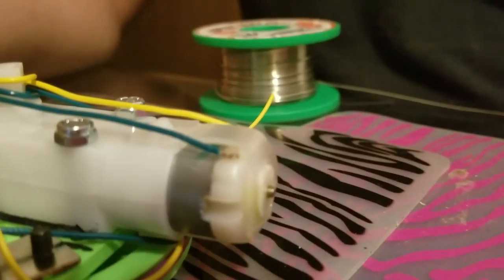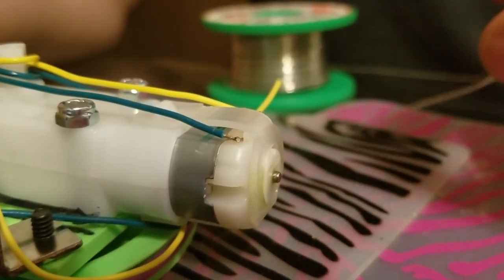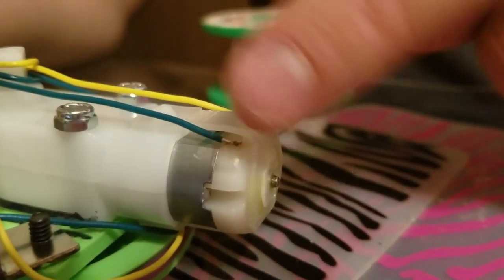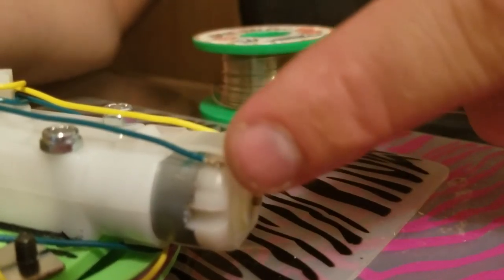The reason that you solder things together is so that electricity can flow through. And we want to make this part right here, where the wire comes in and touches the tab, as solid as possible for the electricity to flow through.